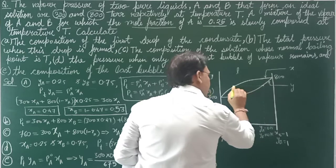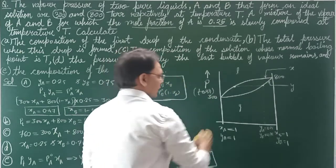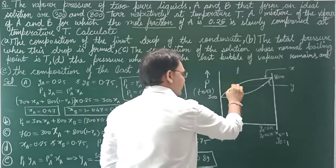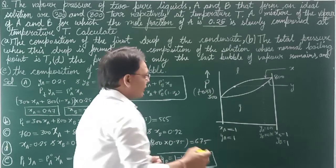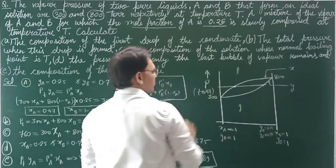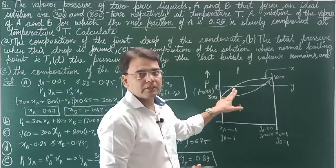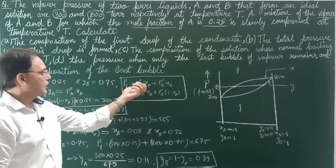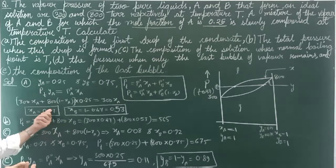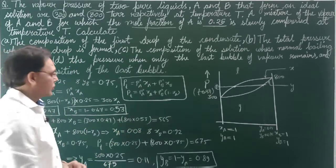Looking at the graph: the upper curve represents the liquid mole fraction (x) and the lower curve represents the vapor mole fraction (y). The values 0.47 and 0.53 we calculated are the liquid composition, found at the same pressure. For part B, that pressure is what we need. Using P_total = P°_A·x_A + P°_B·x_B = 300·(0.47) + 800·(0.53), the answer is 565 torr.